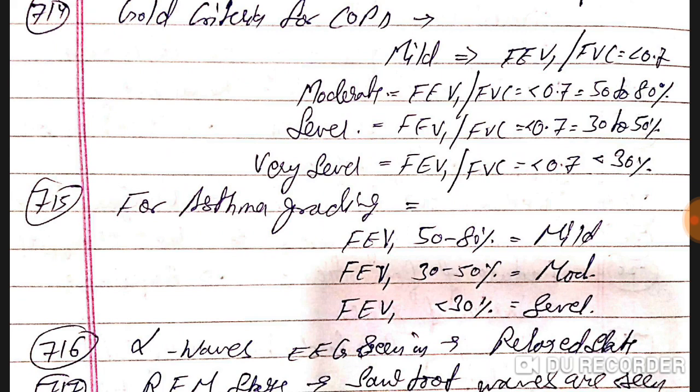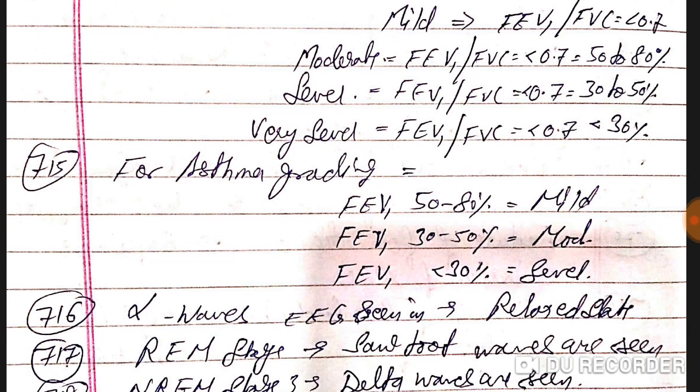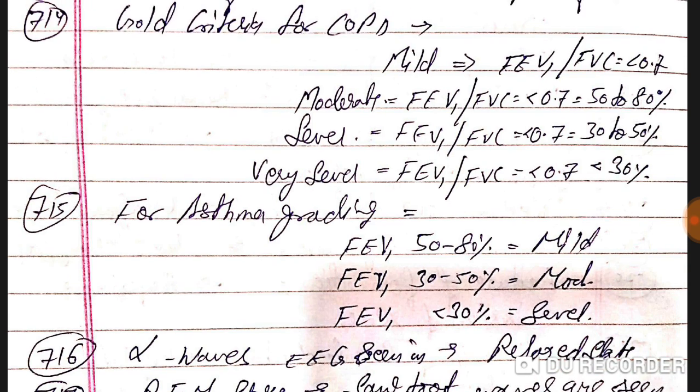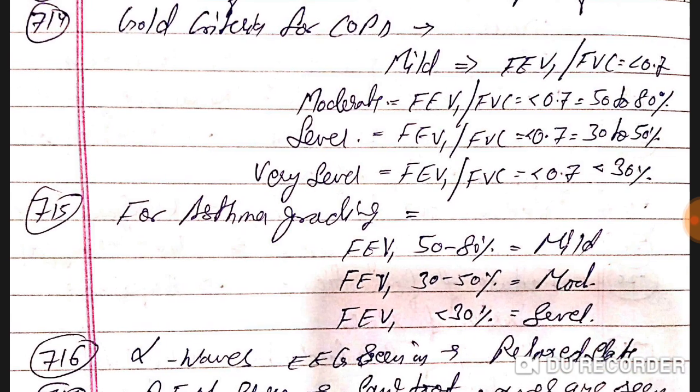GOLD criteria for COPD: mild is FEV1/FVC less than 0.7. For moderate COPD, FEV1 is 50 to 80 percent. Severe is 30 to 50 percent, and very severe is less than 30 percent.